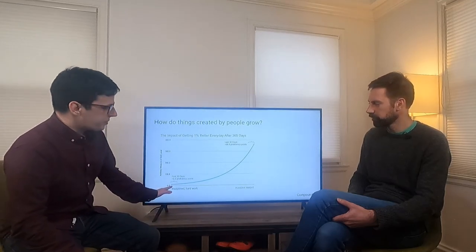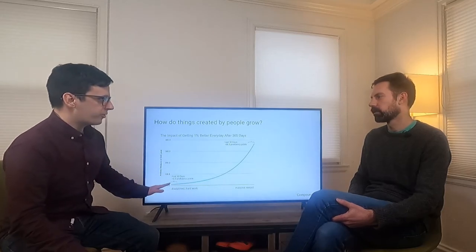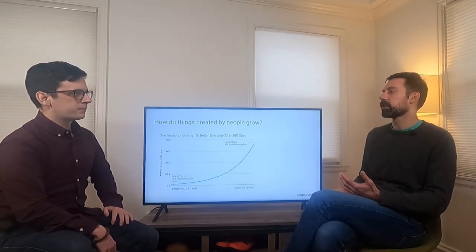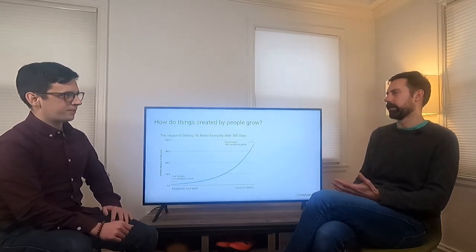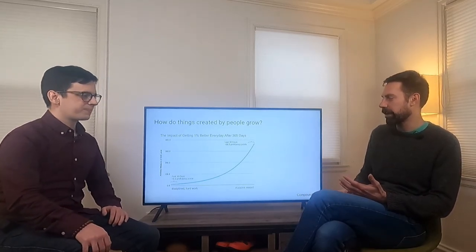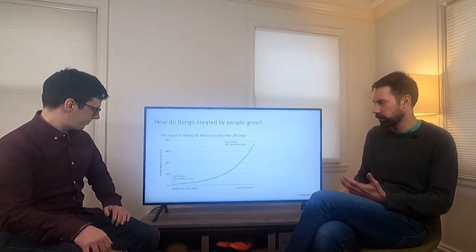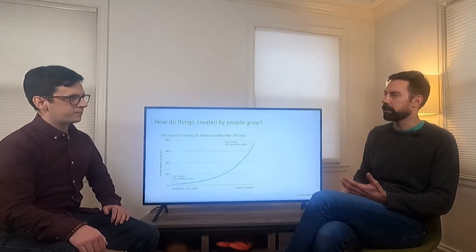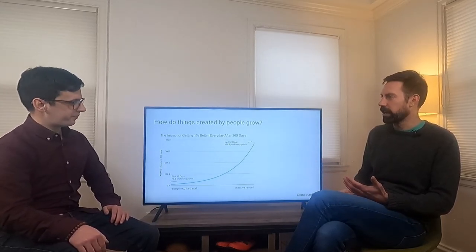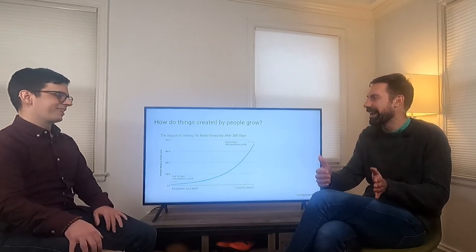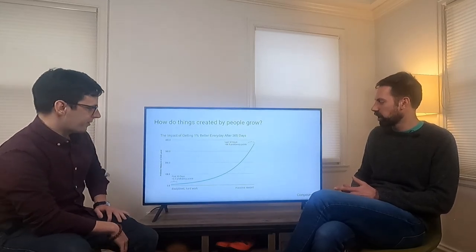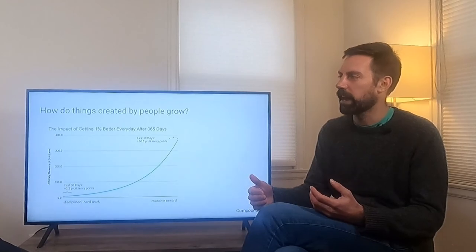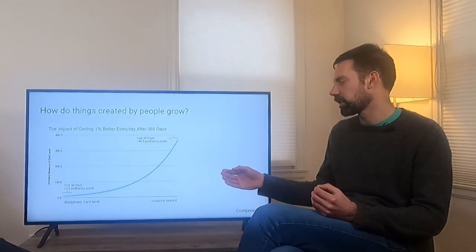If you can get 1% better over 365 days, you start out at that end of the curve with very small improvement every day, but at the end of the year you end up with great improvement. If you start out at an arbitrary skill level of 10, 1% of 10 is 0.1 — negligible. In the first 30 days you only gain 3.3 proficiency points, which is very small. But if you're at a level of 300, 1% of 300 is 3 — that's 3 proficiency points in just one day, which is way more than the first 30 days total. If you stay disciplined and execute every single day, getting a little bit better each day, at the end of that cycle there will be massive reward.